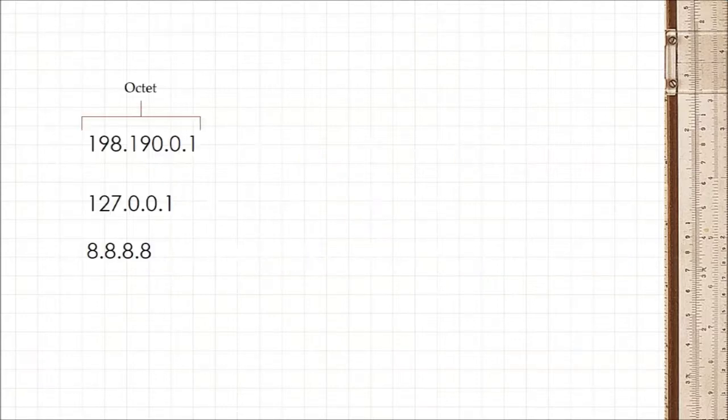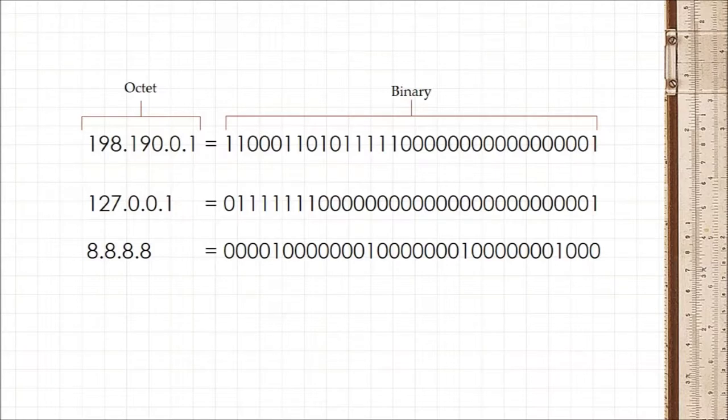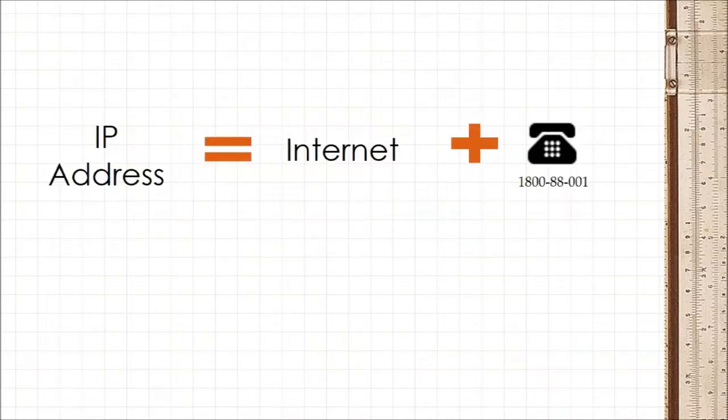The octet system, though, is a simpler way to represent a 32-bit number. Underneath it all, IP addresses are nothing more than internet phone numbers that allow computers on the internet to communicate with each other.